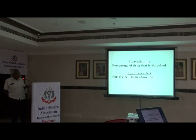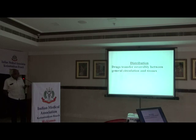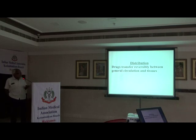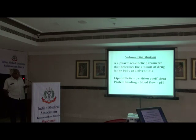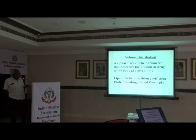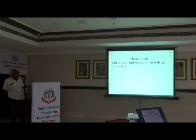Bioavailability is the percentage of drug that is absorbed. The first-pass metabolism is the portal and hepatic effect, where the drug is either destroyed in the gut or in the liver. Distribution is also very important — it transfers the drug between the general circulation and the tissues. Volume of distribution is a pharmacokinetic parameter displaying the amount of drug in the body at a given time. The more the concentration, the more the effect. Lipophilicity, partition coefficient, and protein binding are factors affecting volume of distribution.